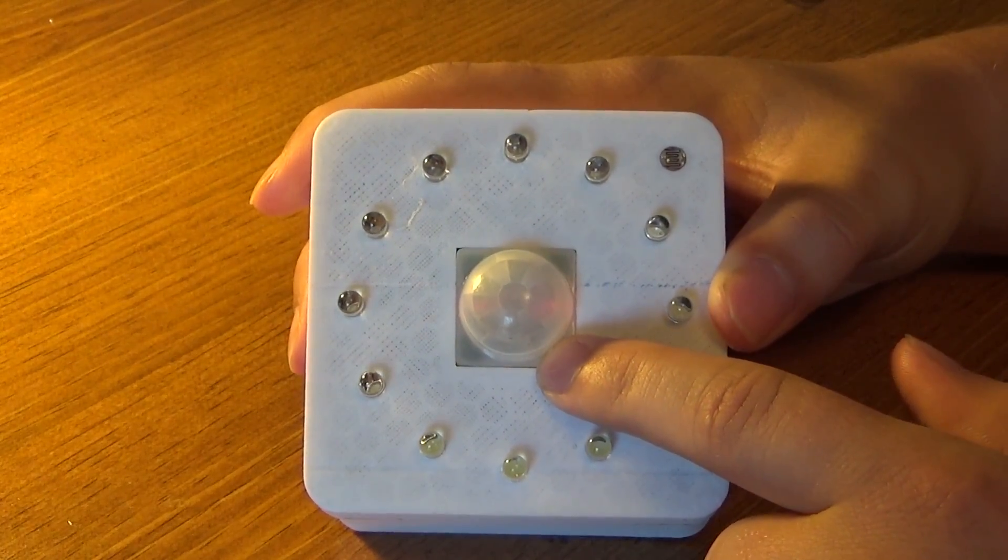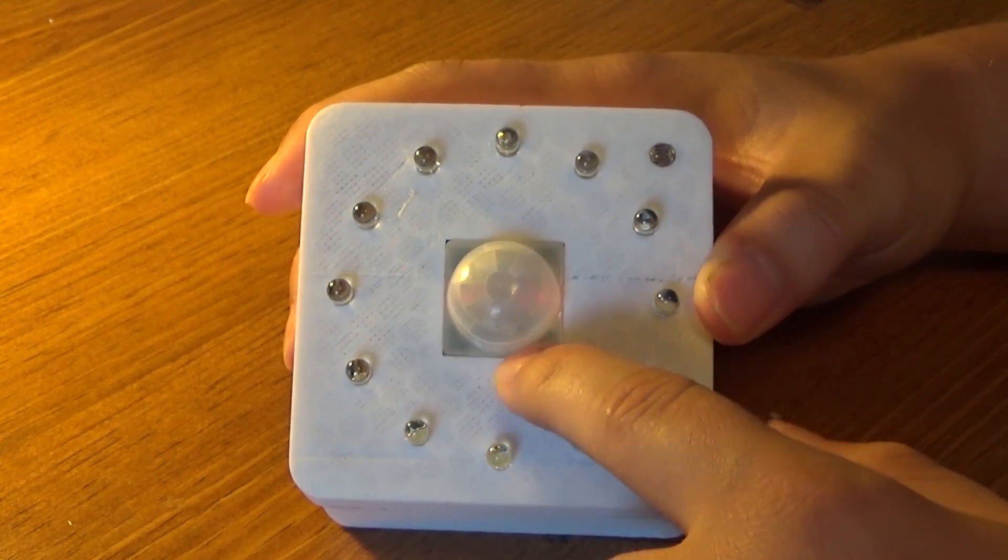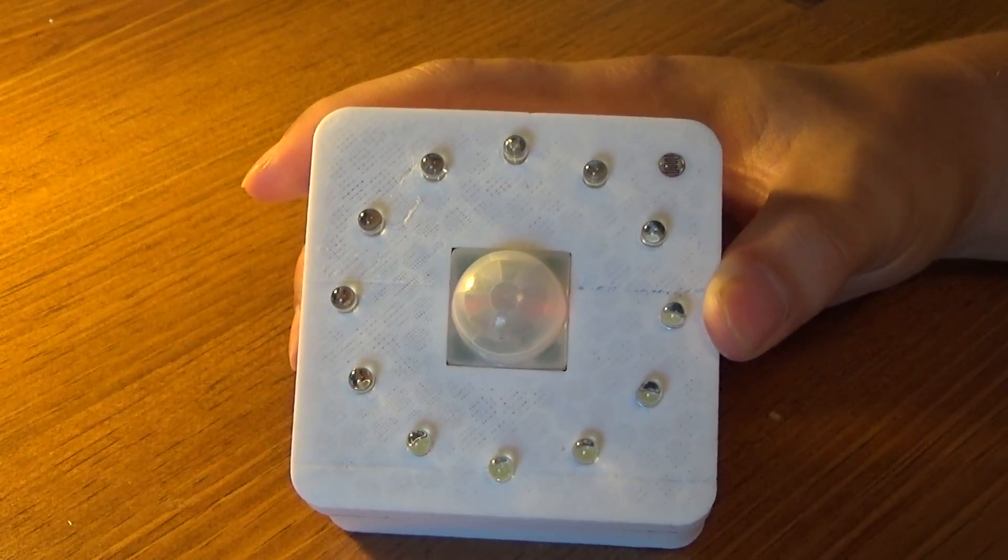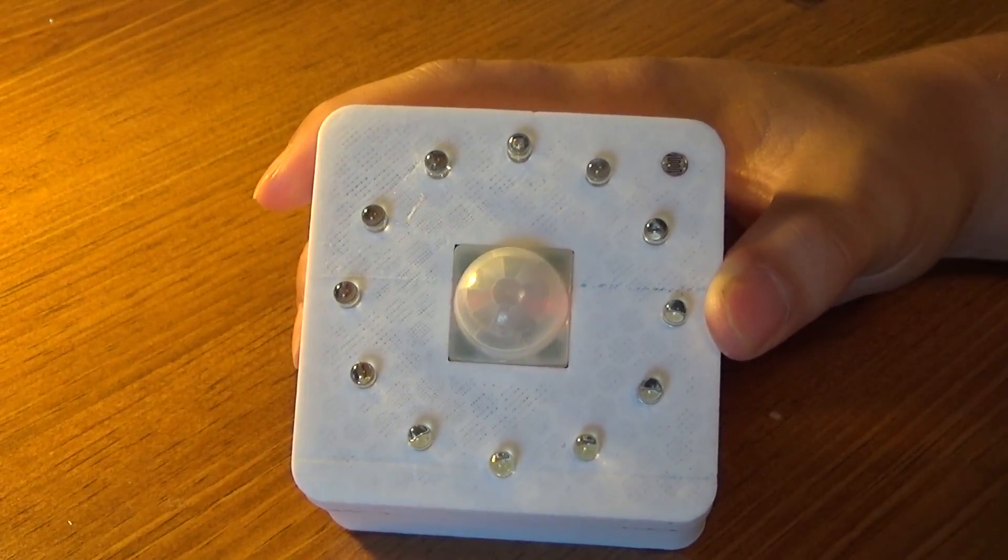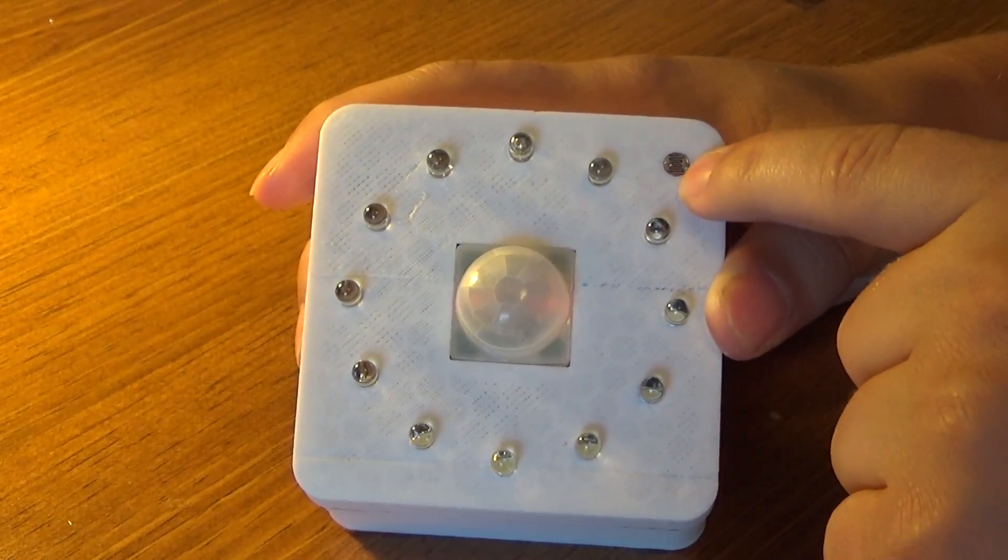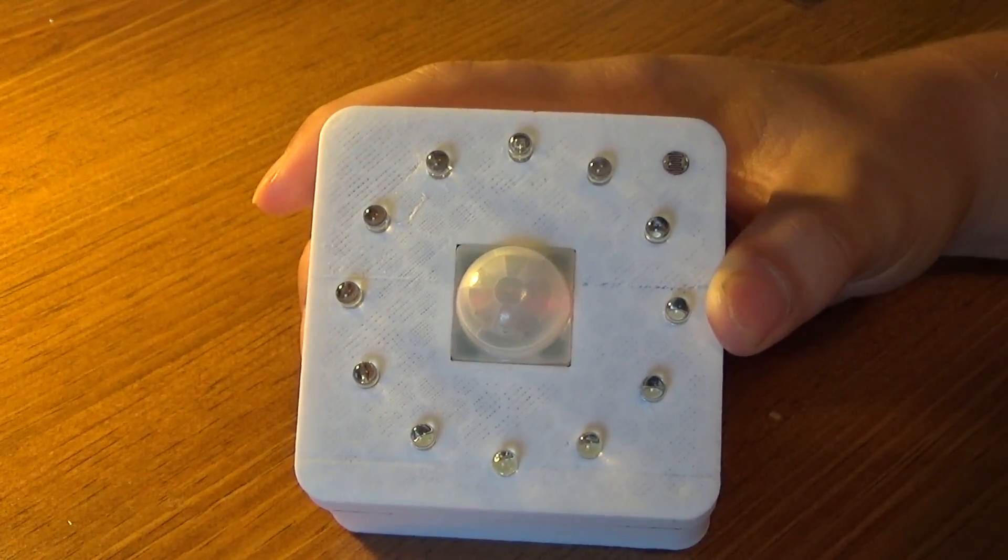We've got a PIR sensor here. This is a Parallax Model B. You can see the red lights in the back of it are illuminating because it is detecting motion right now, but the lights won't turn on unless it's dark out and we have a CDS cell up here so we can detect the amount of light that we have.